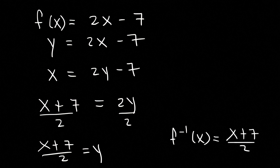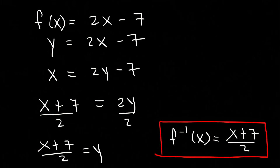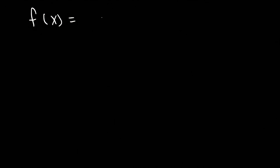So we can write the final answer as the inverse function is equal to x plus 7 divided by 2. And that's a simple way in which you could find the inverse of a function. But now let's look at some more examples. Try this one: let's say that f of x is equal to x cubed plus 8. Go ahead and find the inverse function.